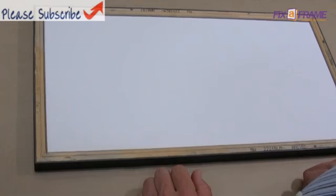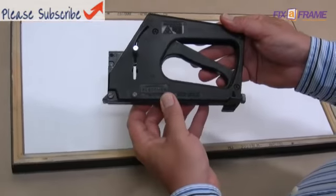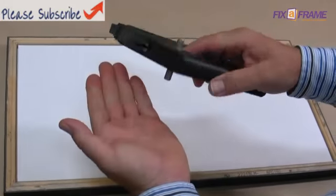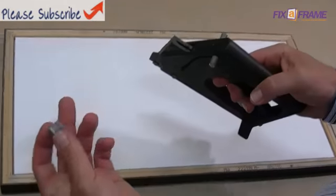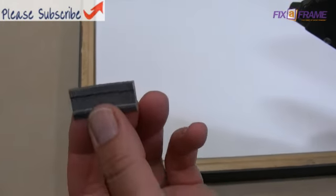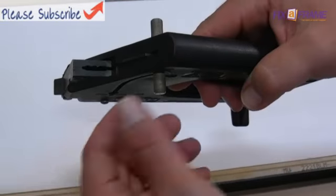In this example I'm going to use a framer's point. Framer's points are put in by a gun. This is a Fletcher framer's gun. There are different types, but this is the most popular. Inside there are a little strip of points. These can be nailed in or pushed in on their own, but it works a lot easier when it's put in with a gun.